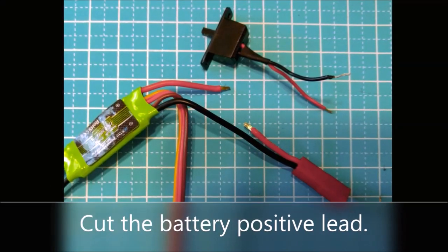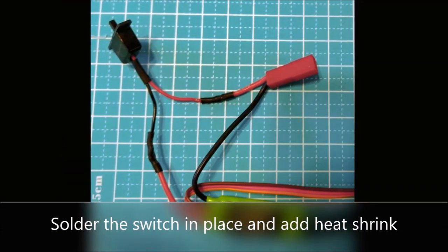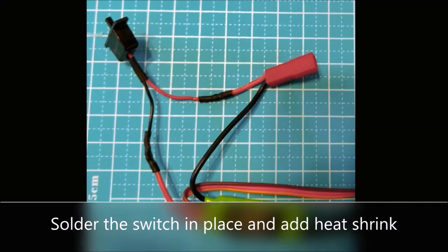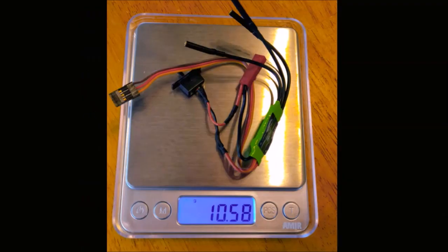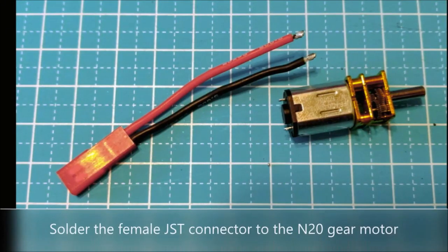We're now going to cut the battery positive lead from a brushless motor ESC here. We're going to solder the switch in place. Now we have our switch for our bot. Remember to heat shrink those wires. All together this adds about a gram or so.